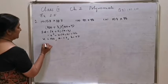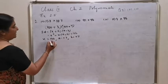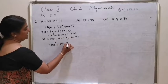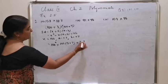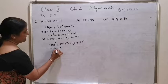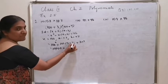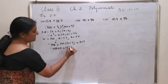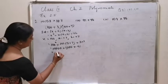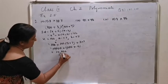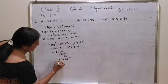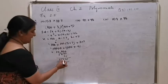Directly substituting: 100 square plus 100 into 3 plus 7 plus 3 into 7. 100 square is 10,000; 10 into 100 is 1,000; 3 sevens are 21. Arranging and adding: 10,000 plus 1,000 plus 21. The answer is 11,021.